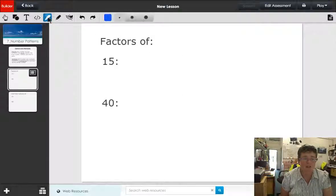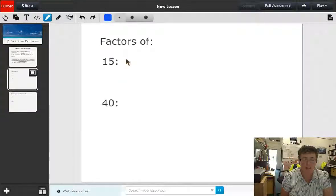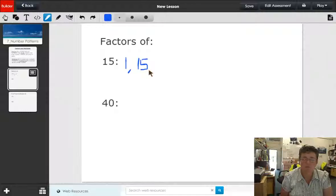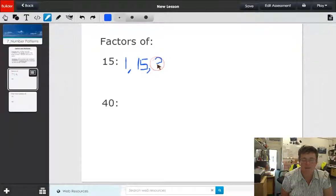Starting off with factors, the factors of 15. If we start at the number one, one times 15, so one and 15 are both factors of 15. Two is not a factor of 15 because two times nothing is 15. Three is a factor of 15 because three times five is 15.